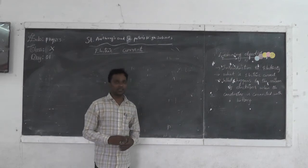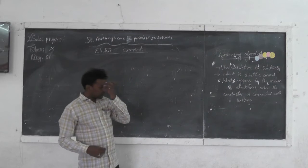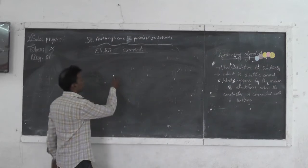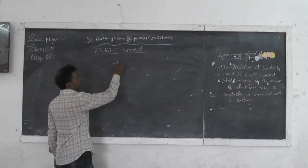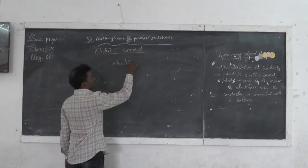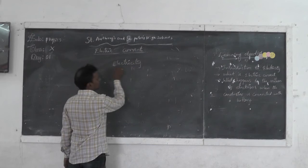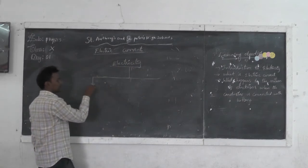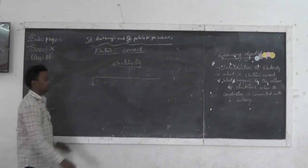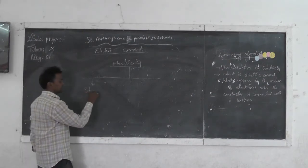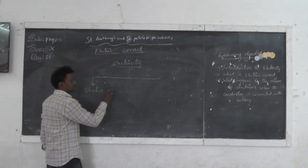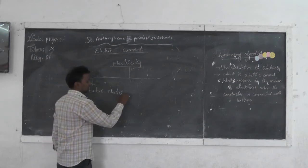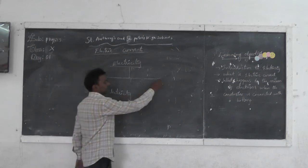So, why are protons not in motion? In that case, there are two types of electricity. Electricity is divided into two types: one is static electricity, which we have studied up to the ninth class, and the other is current electricity.